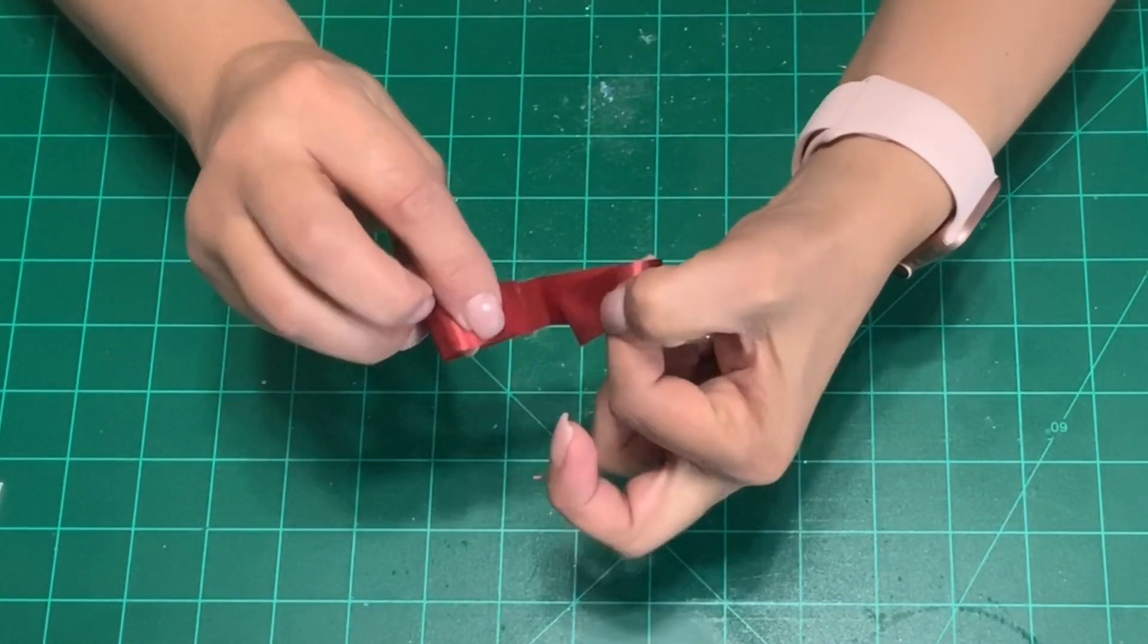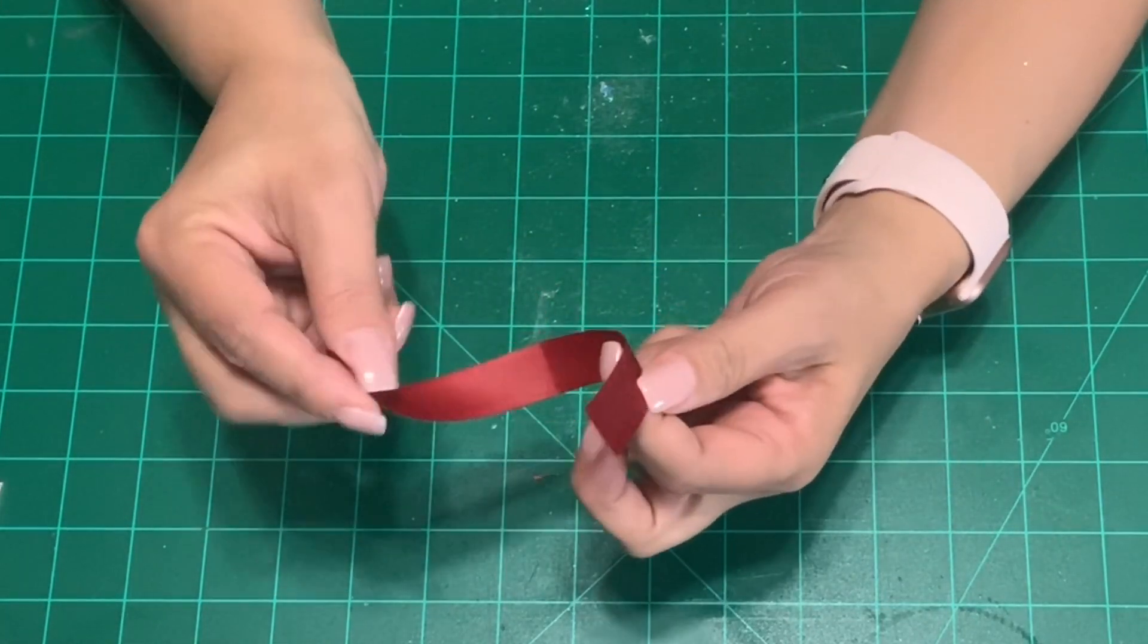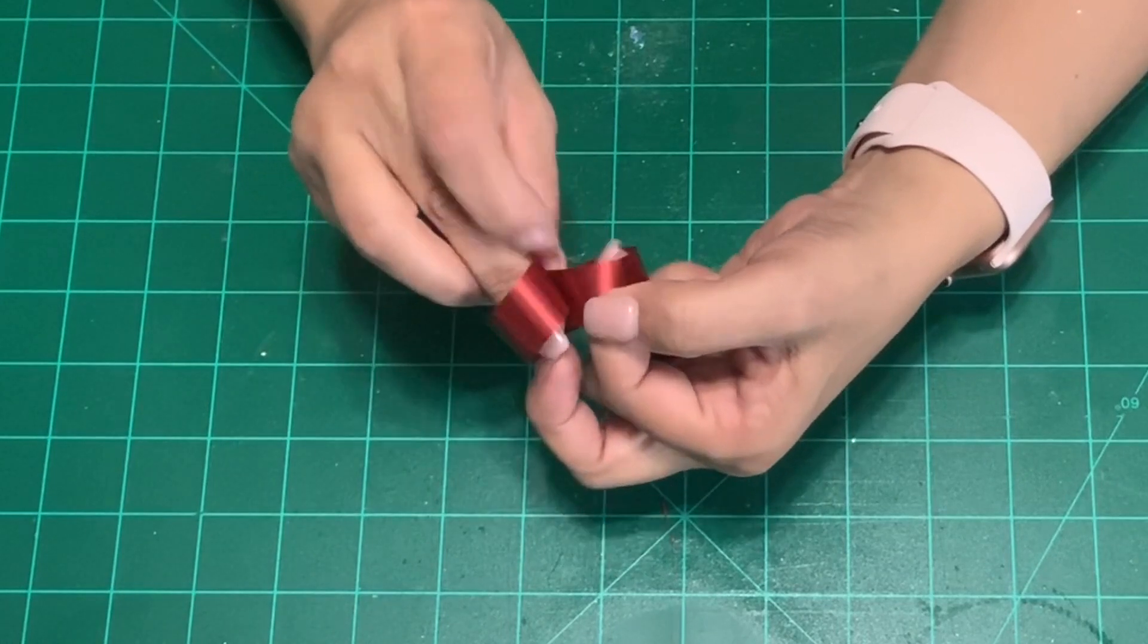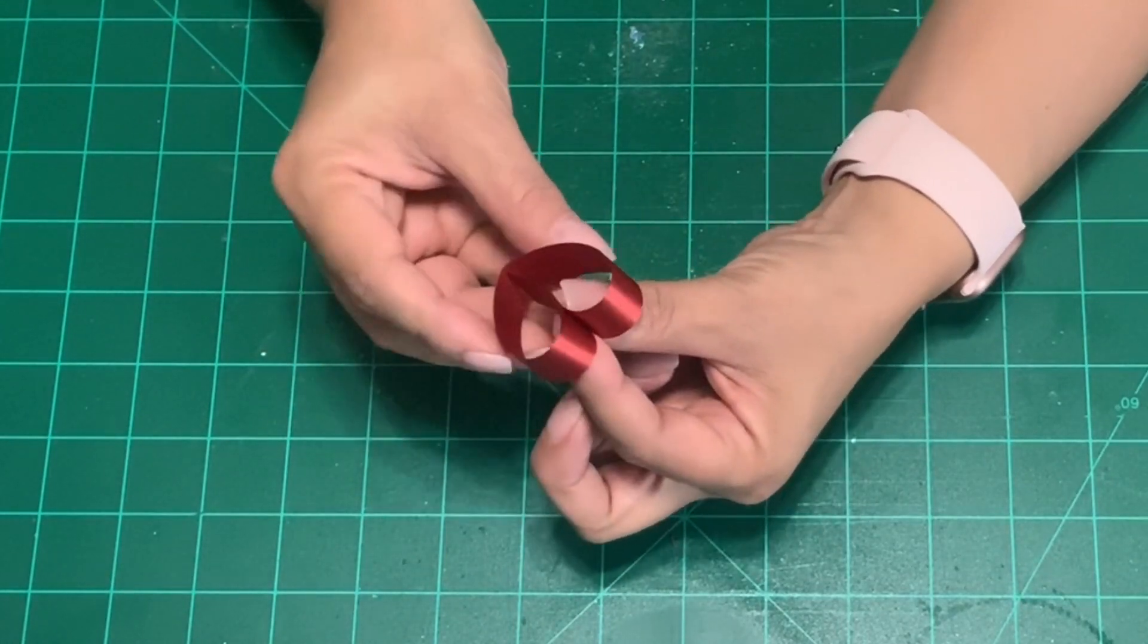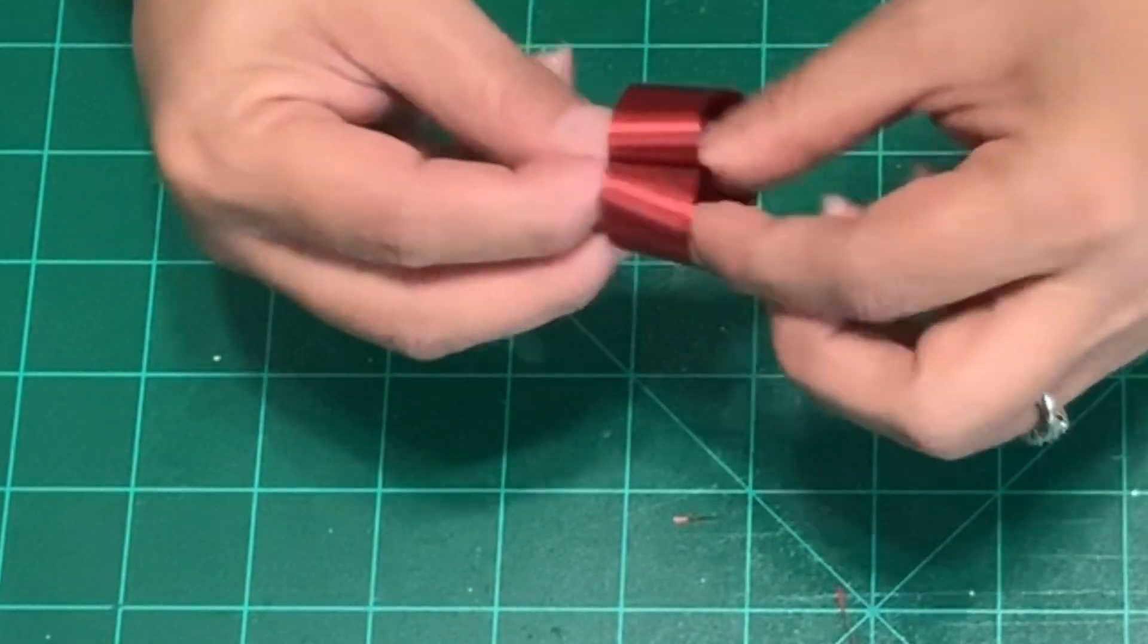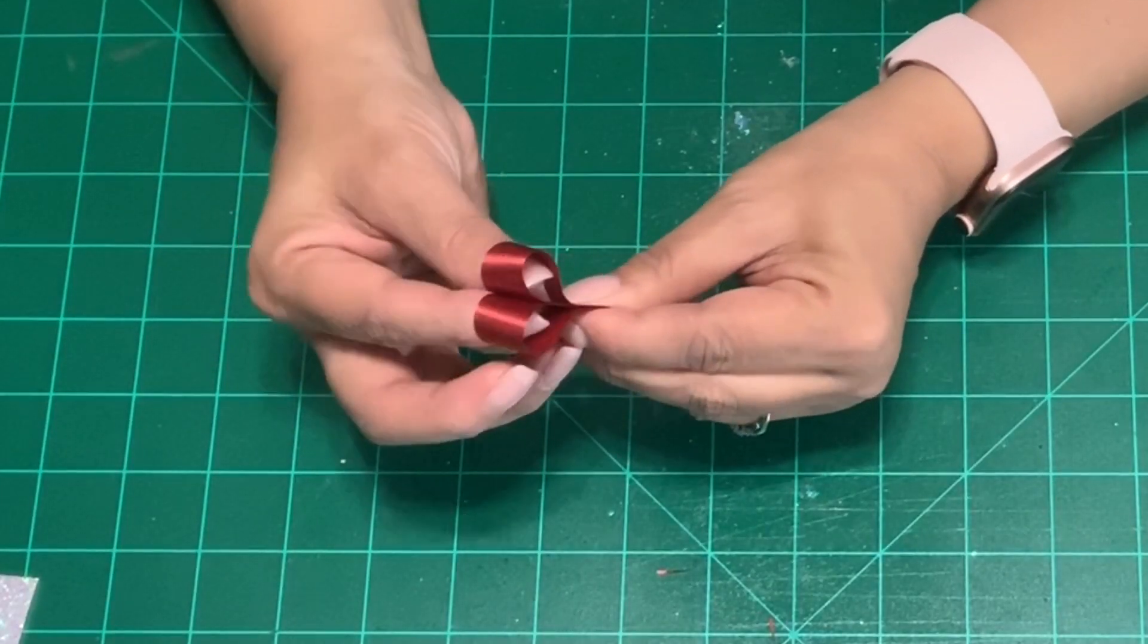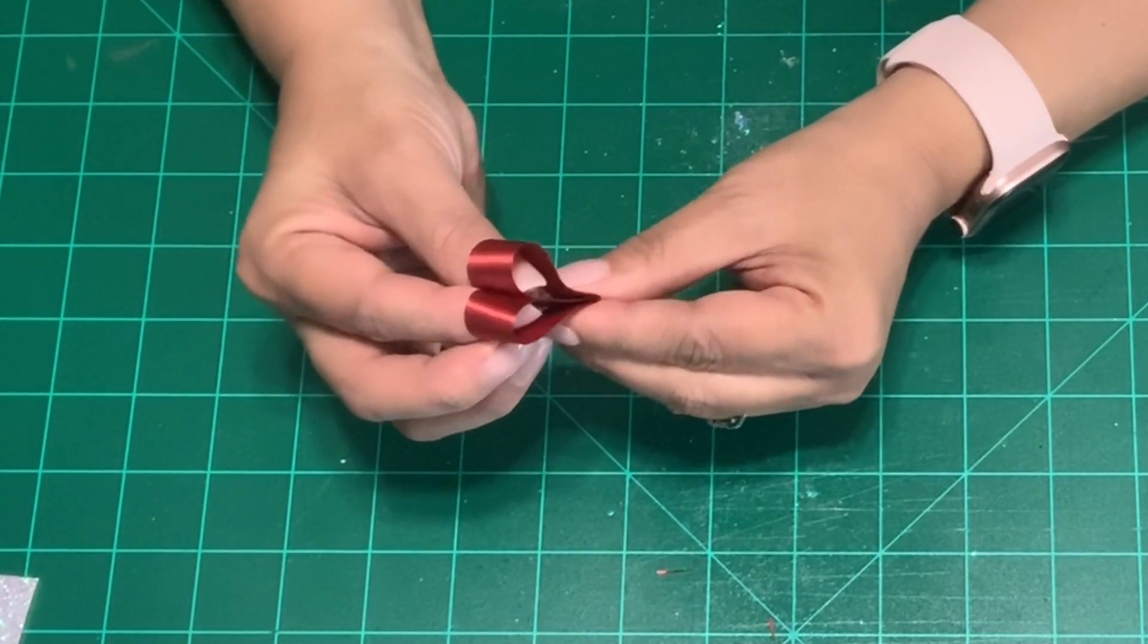Now we want to take both ends and fold them in so they meet inside the crease. I usually use my two fingers to fold them in and then push them down into the crease. They must sit flush in the crease. Once you get them to sit on the crease go ahead and squeeze the bottom.